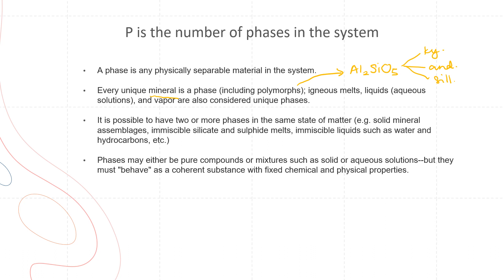Another example of unique phases are igneous melts, liquids, and vapor. It is possible to have two or more phases in the same state of matter — solid mineral assemblages, immiscible silicate and sulfide melts, and immiscible liquids such as water, hydrocarbons, etc. Phases can be pure compounds or mixtures, such as solid or aqueous solutions, but everything has to behave as a coherent substance.